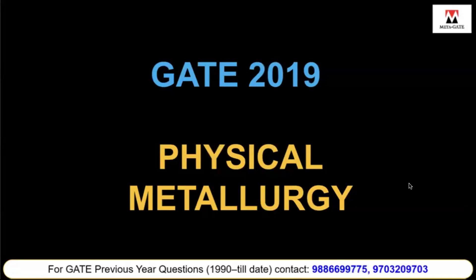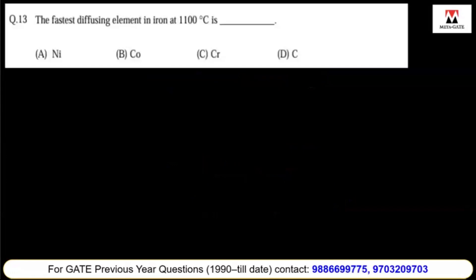This is a GATE 2019 physical metallurgy question. The fastest diffusing element in iron at 1100 degrees Celsius is: nickel, cobalt, chromium, or carbon. Iron at 1100 degrees Celsius has an FCC phase, and nickel, cobalt, and chromium are substitutional elements, whereas carbon is interstitial.